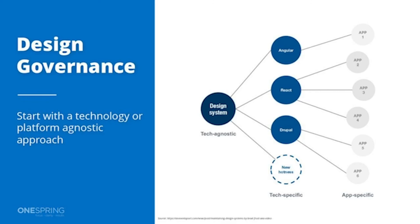Typically a design system is technology or platform agnostic to start. Think about it in terms of creating your color palette, building out initial components in HTML5 using a 'vanilla' version of JavaScript with CSS or Sass. This gives you the ability to more easily port those components over to different languages without having to revamp everything.